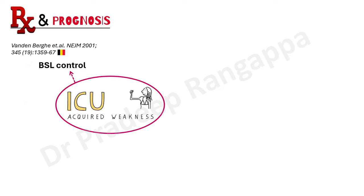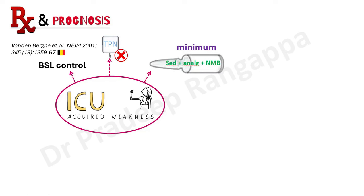With regards to treatment and prognosis, there is no definitive treatment, but you have to minimize all the risk factors. The landmark study by Vandenberg clearly showed that ineffective blood sugar control worsens outcomes in critical illness neuropathy. Good blood sugar level control is paramount in enhancing recovery. Try to stop, mitigate, or reduce the duration of TPN usage, as TPN usage proportionately increases the risk of critical illness neuropathy. Also minimize over-sedation, over-analgesia, or indiscriminate use of neuromuscular blockers, and make best efforts to wean off steroids and vasopressors by correcting the underlying cause.